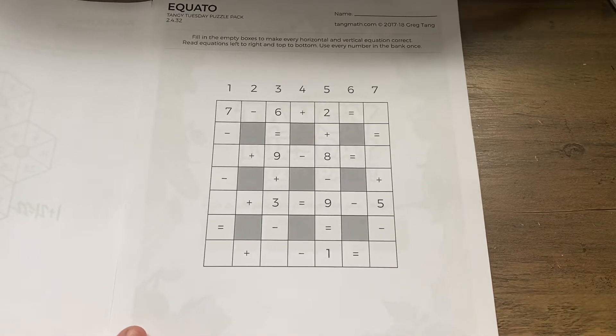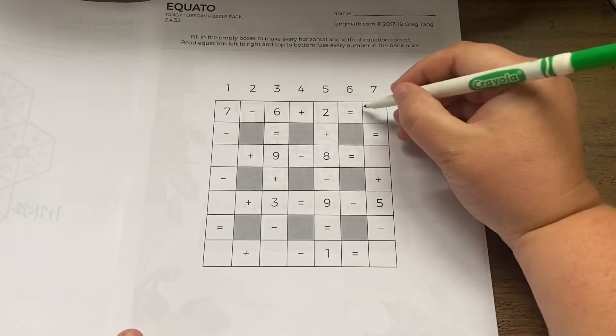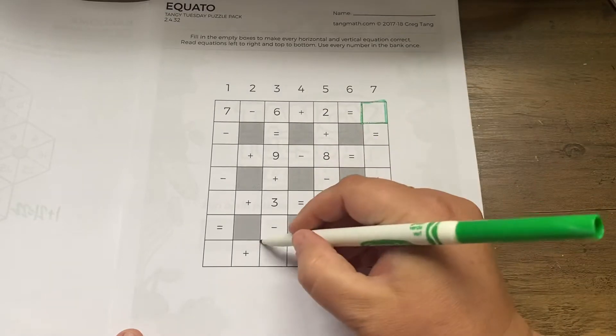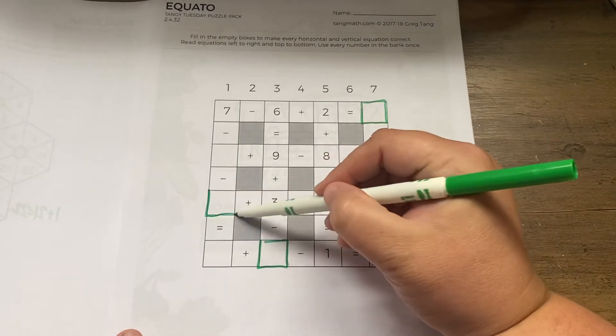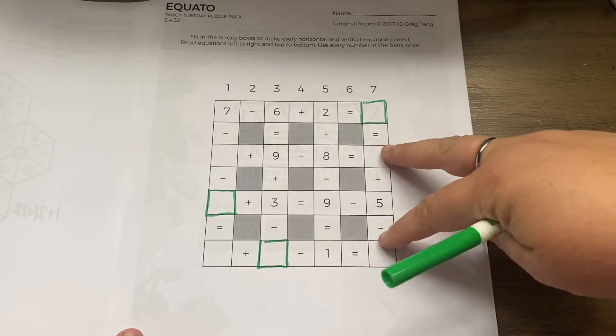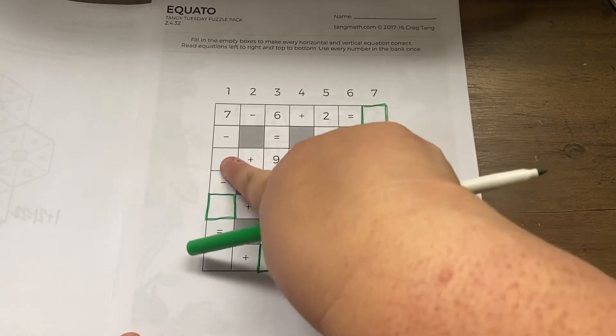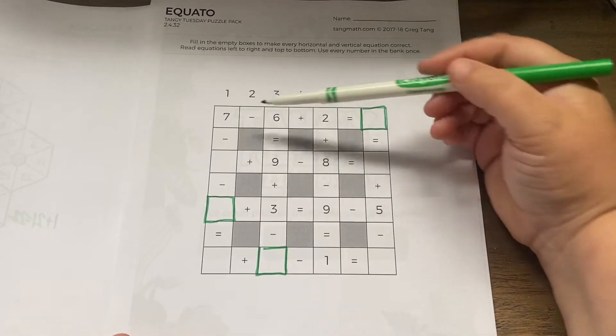Equaitos are kind of tricky, but I like to find the problems that are only missing one number and solve those first, because it can only be one thing. If you have an equation that has more than one missing, sometimes it could be either or. Well, let's just try it out.